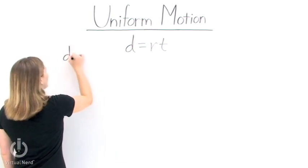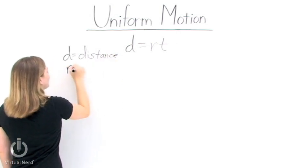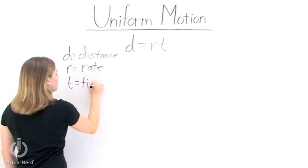d, in this case, is equal to our distance. r is equal to our rate. And t is, of course, equal to time.